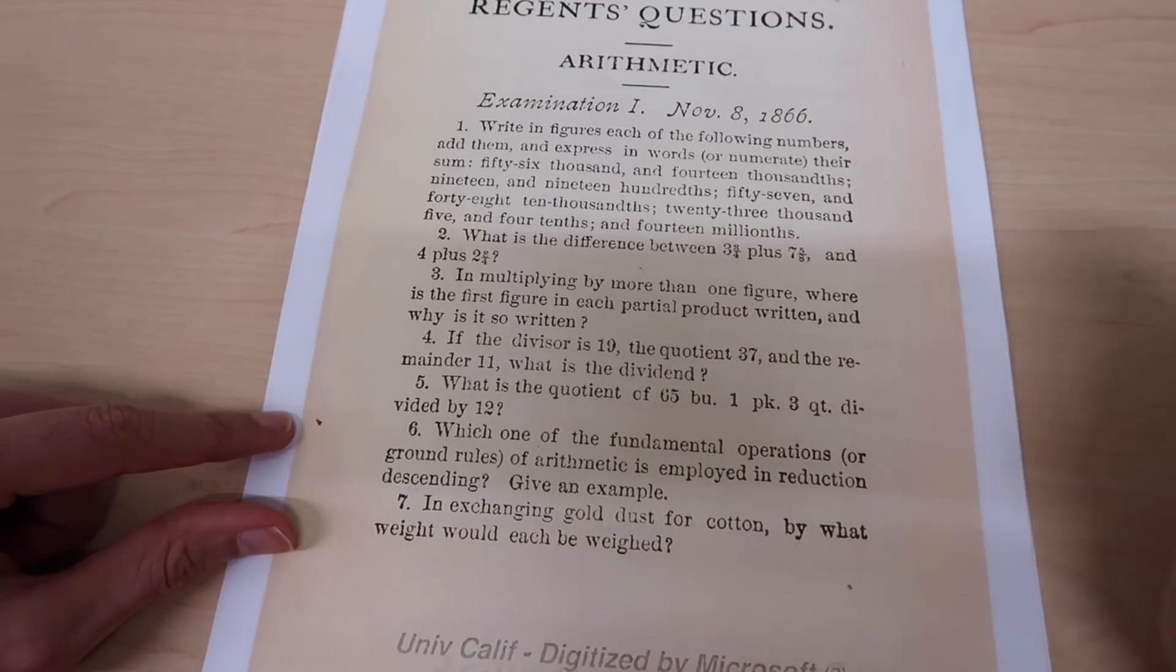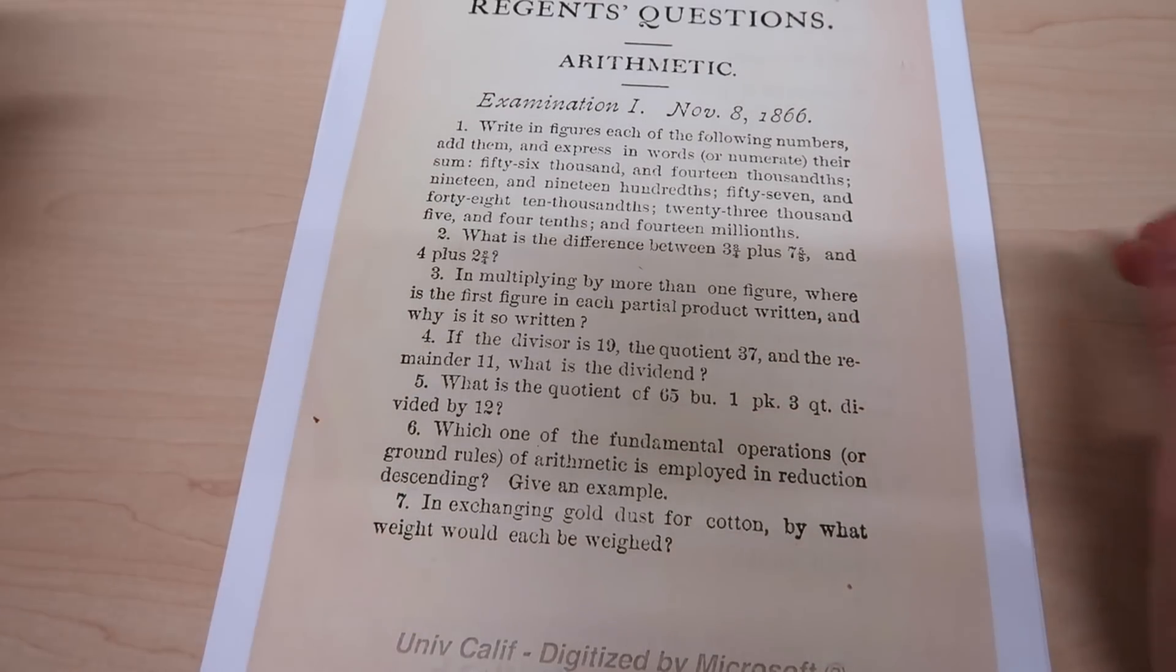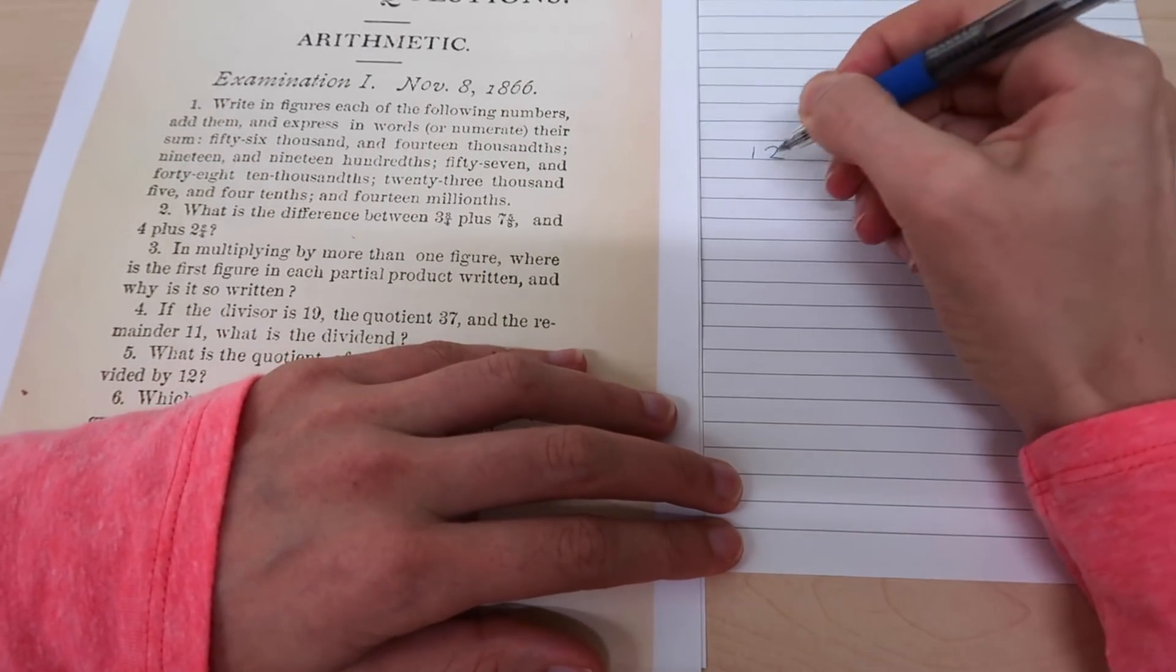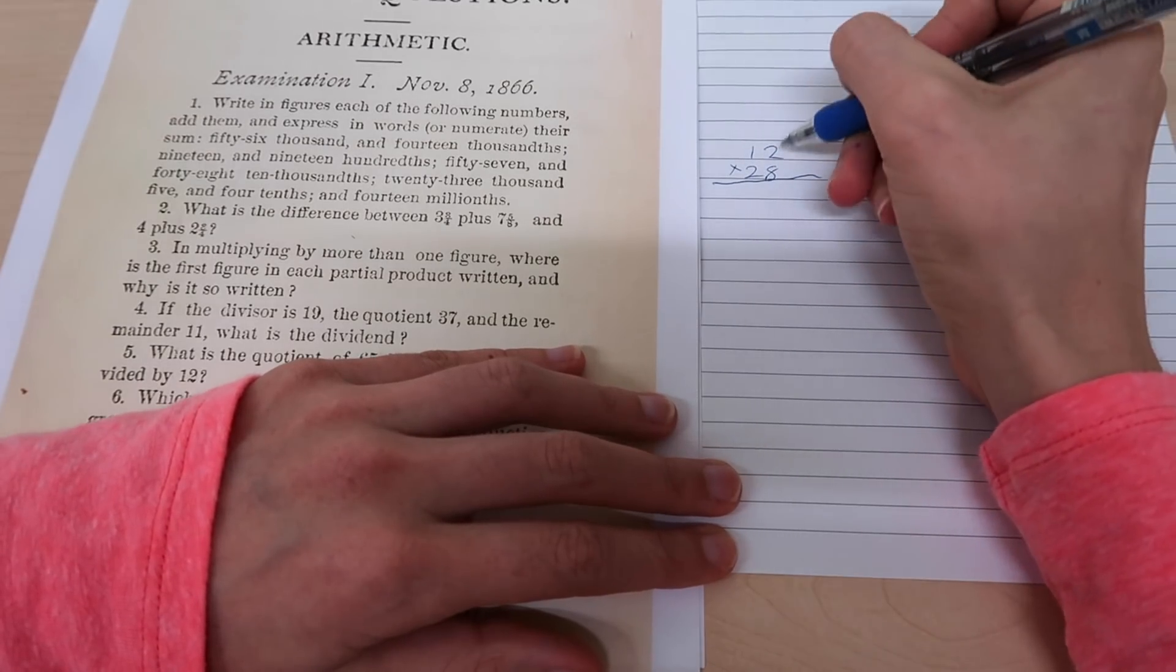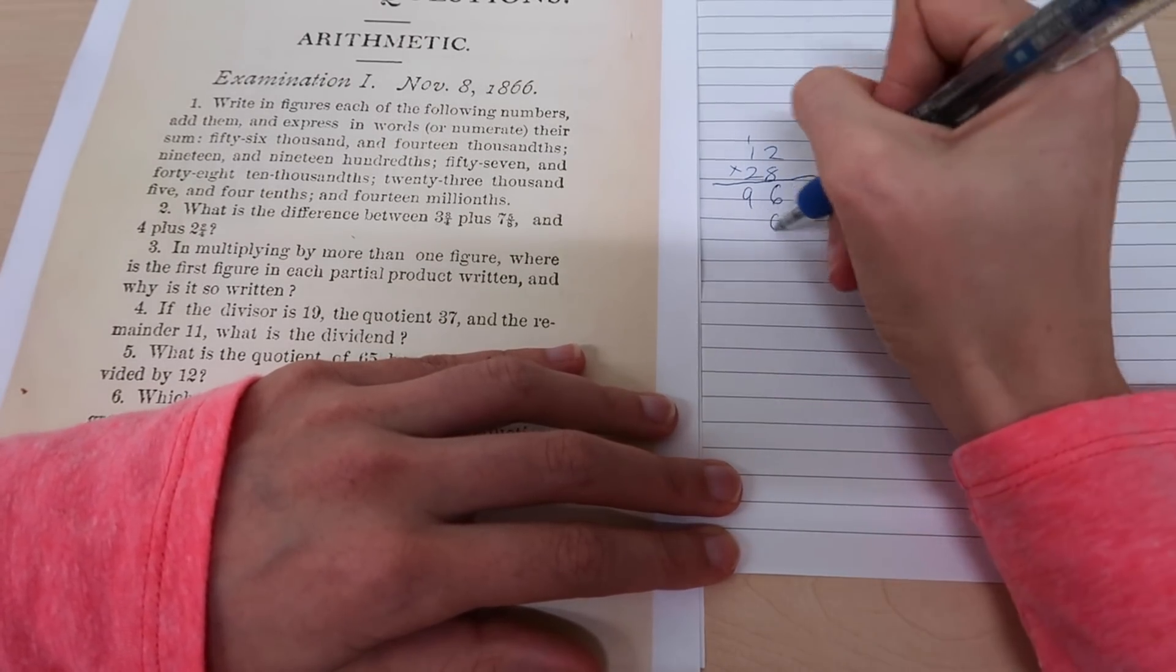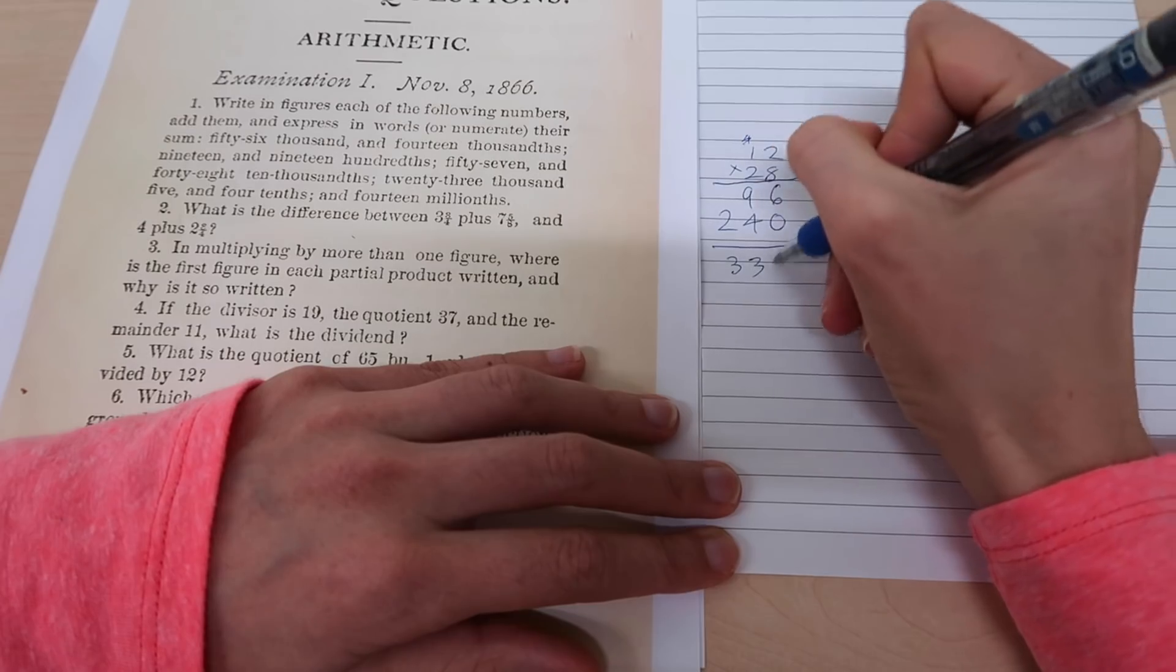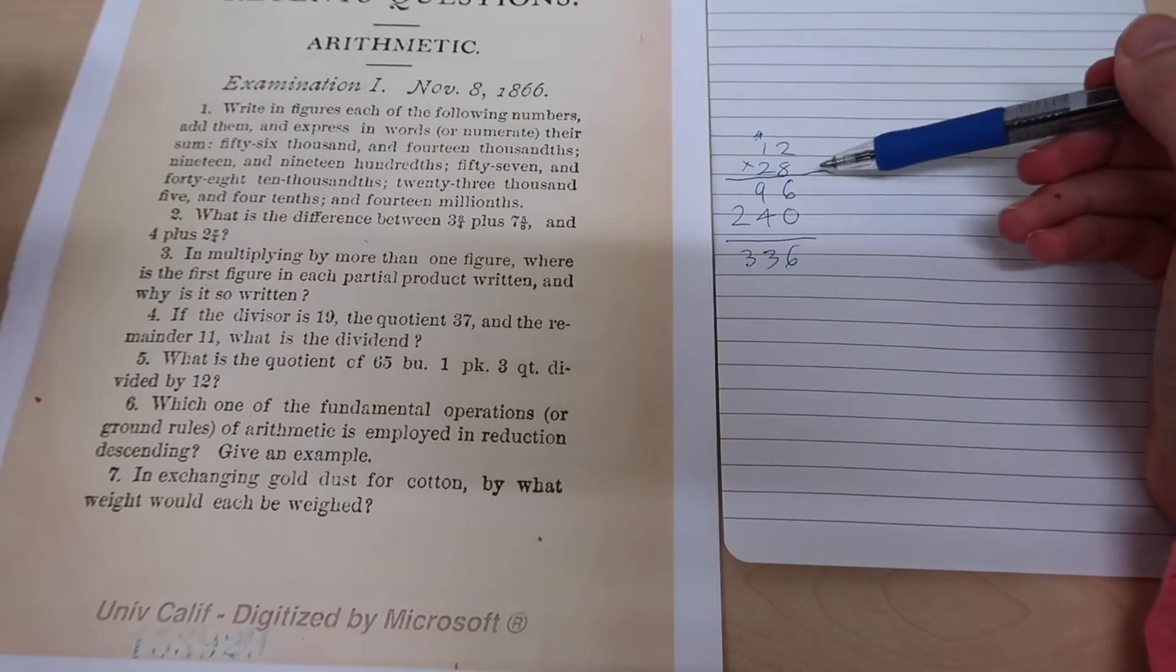Question three: in multiplying by more than one figure, where is the first figure in each partial product written and why is it so written? Now this one seems a little bit confusing. I guess they're talking about multiplying by more than one figure, which to me means when you have two numbers being multiplied together and each number is more than one digit in size, and you do that thing when you do it column by column. So you'd go two by eight, sixteen carry the one, one by eight plus that nine, and then you do the next one, the tens, and then you add these up. I think that's what they're talking about but I don't really know how to answer the question. Where is each partial product written? I don't know.